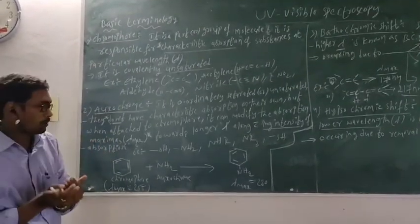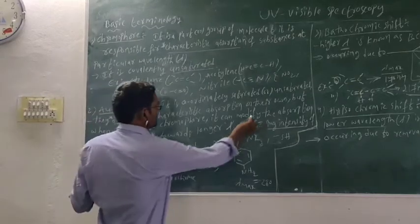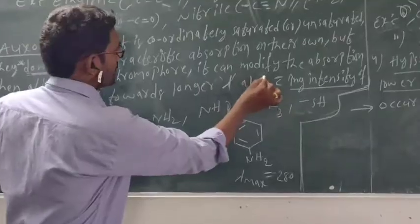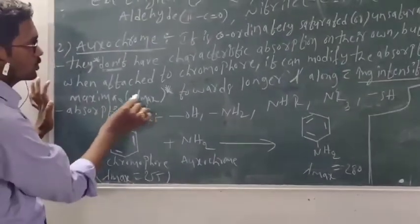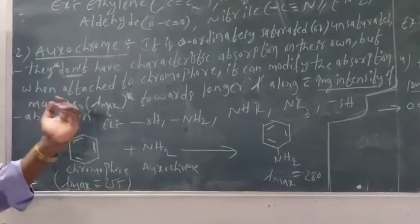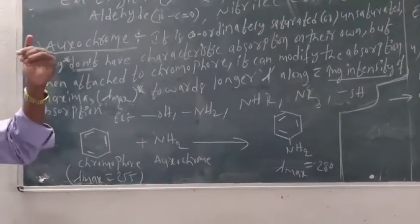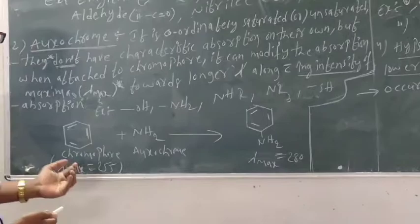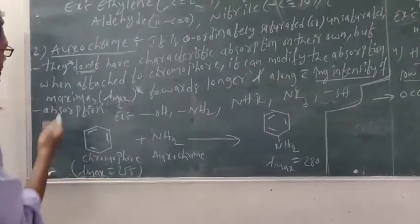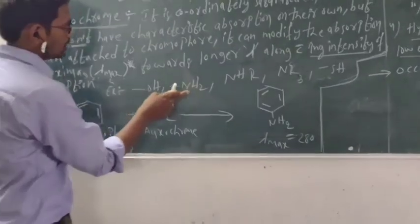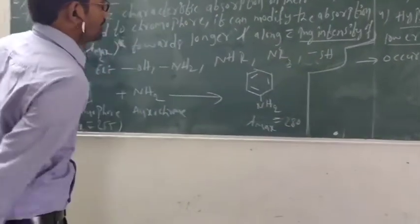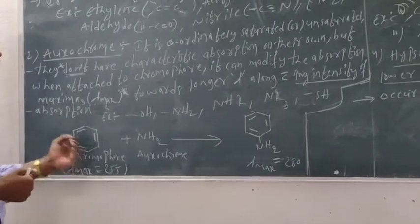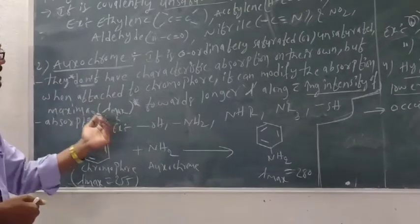When the auxochrome is attached to the chromophore, the lambda max will be modified — it can increase the lambda max of the chromophore towards longer wavelength, also increasing the intensity of absorption. Examples of auxochrome are: -OH, -NH2, -NR2, and similar groups. All these are examples of auxochrome.